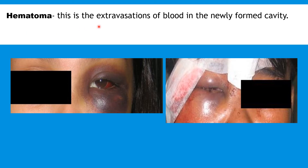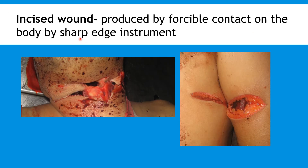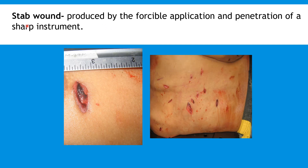Hematoma is the extravasation of blood in a newly formed cavity. Incised wounds are produced by forcible contact on the body by a sharp-edged instrument. Stab wounds are produced by the forcible application and penetration of a sharp instrument.